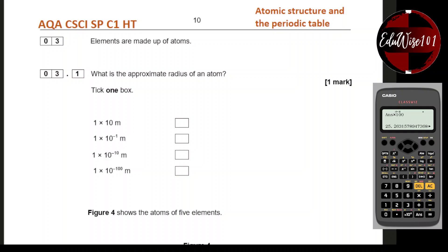Question 3.1: Elements are made up of atoms. What is the approximate radius of an atom? These are numbers you just need to remember. The answer is 10 to the power of minus 10. The other thing they can ask is the size of the nucleus - the nucleus of an atom is less than 1 over 10,000 the size of an atom.